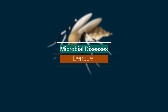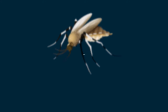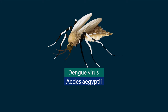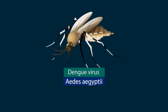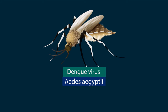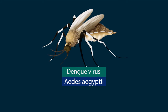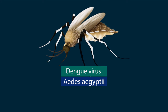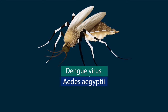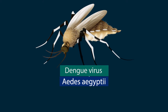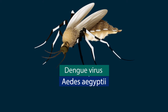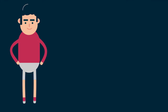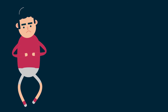Dengue is also known as break-bone fever. It is a tropical disease caused by the dengue virus. The mosquito Aedes aegypti, which transmits chikungunya, can also transmit dengue, so the prevention steps for chikungunya apply to dengue as well.